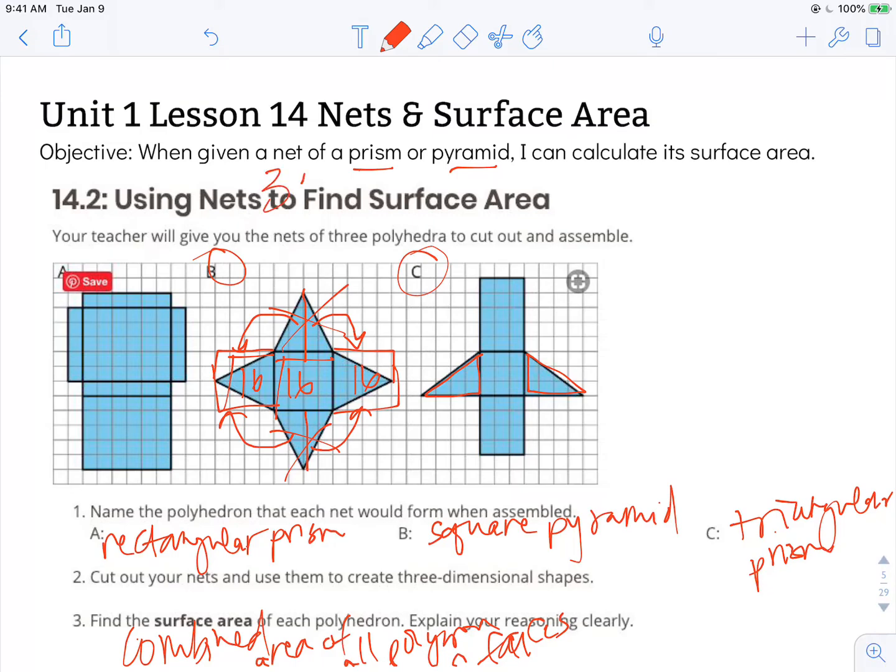So three times sixteen is the same thing as three times two times eight, which is six times eight. So that is forty-eight. B has forty-eight squares. So the surface area of that is forty-eight square units.